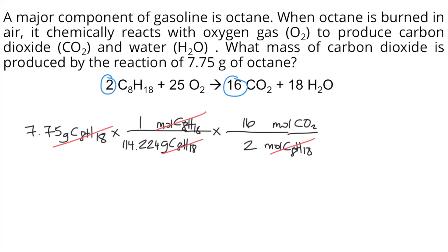And finally, we can convert moles of carbon dioxide into grams of carbon dioxide by using molar mass. So we will use the molar mass of carbon dioxide. So 1 mole of carbon dioxide, if you compute the molar mass, that's 44.01 grams of carbon dioxide per 1 mole. So the moles of carbon dioxide will cancel out, and now we have the grams of carbon dioxide.